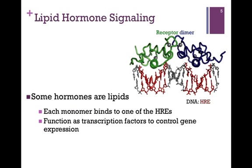Each monomer within that receptor dimer binds to one of these hormone response elements, and it functions as a transcription factor to control gene expression. In other words, it targets certain genes and turns them on so that they are expressed.